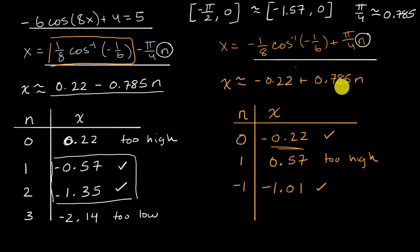And now let's subtract 0.785 again. So I'll have n equals negative two. And so if I subtract 0.785 again, I could round that to negative 1.79, which is lower than negative 1.57. So it's out of our interval. So it's too low. So all of the x values that are in our interval that satisfy this equation are these two right over here, and this one, and this one, and we are done.